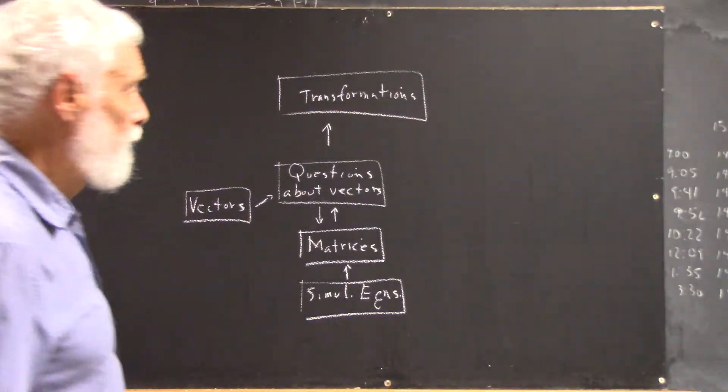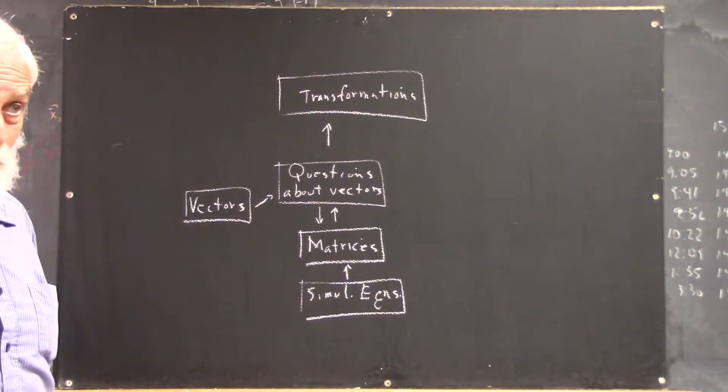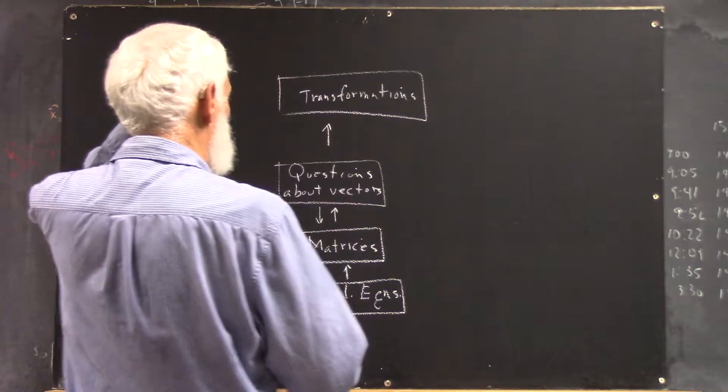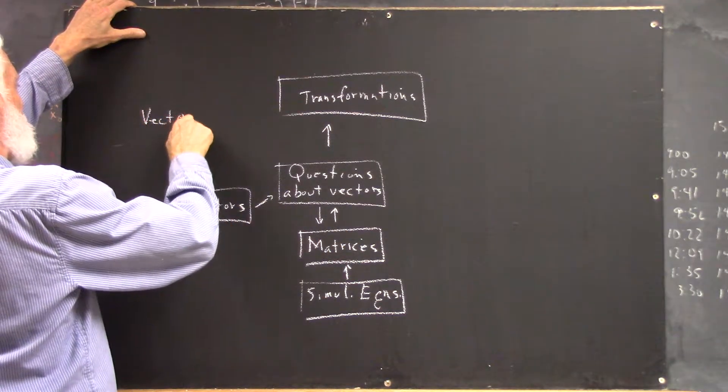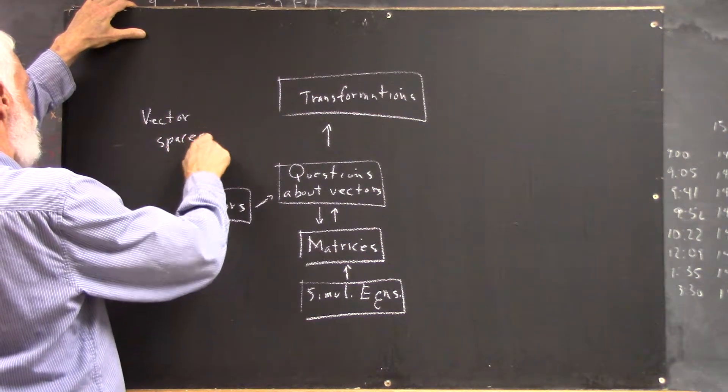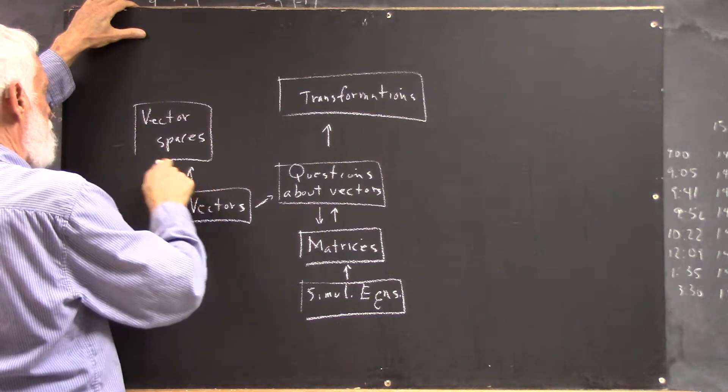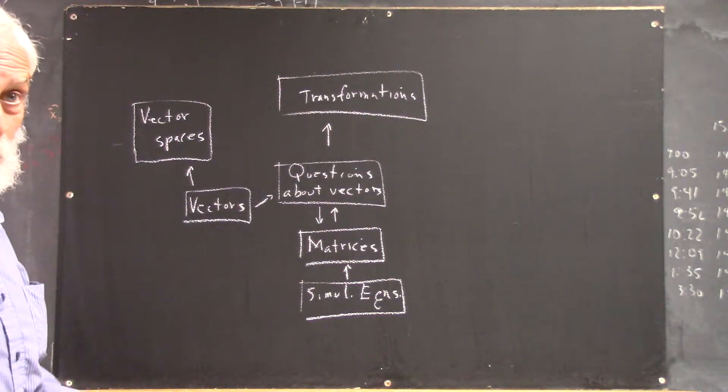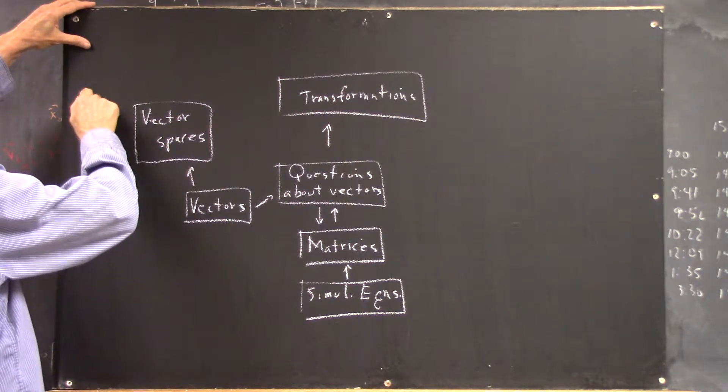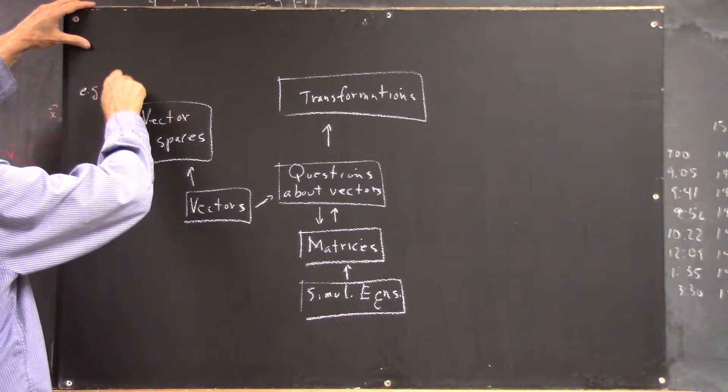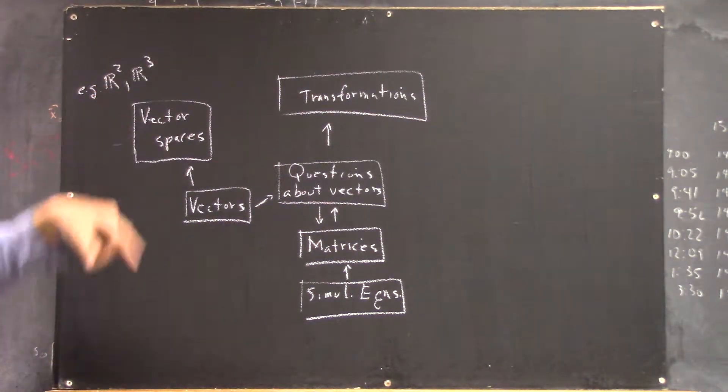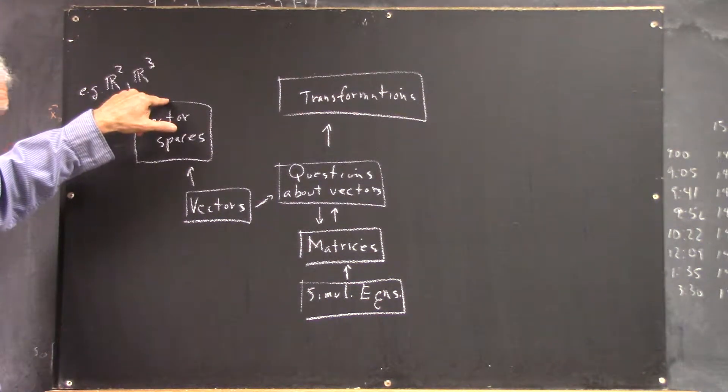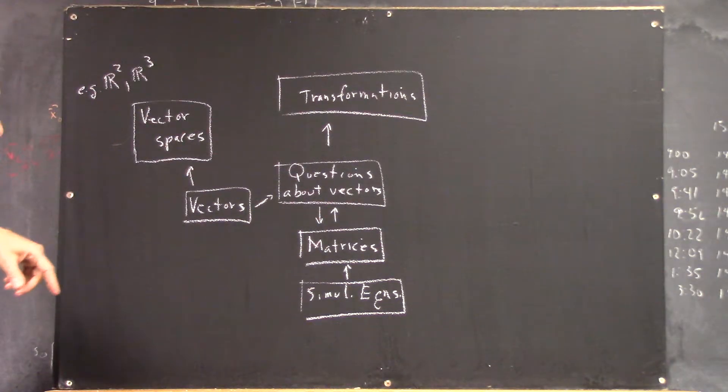And then the idea of vector spaces. Well, if we have vectors, we can identify vector spaces. For example, the vector spaces R2 and R3, which consists of your xy space and your xyz space, can be represented as vector spaces.